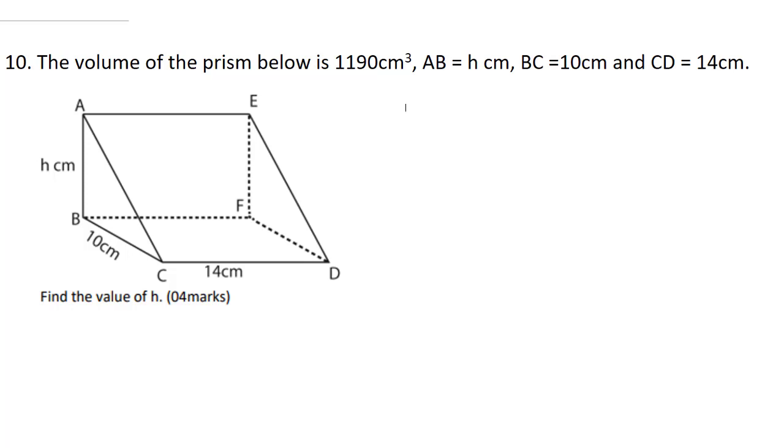Question 10 says, the volume of the prism below is 1190 cm cubed, and AB is equal to h cm, BC is equal to 10 cm, and CD is equal to 14 cm. It says, find the value of h. I want you to first of all understand that this is a triangular prism, and the volume is going to be area of base times the height.